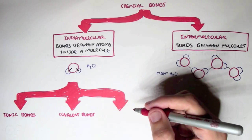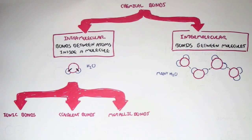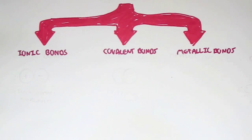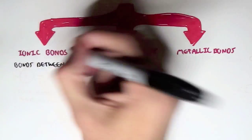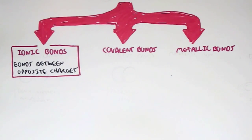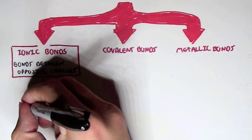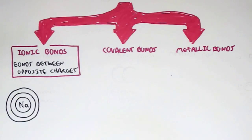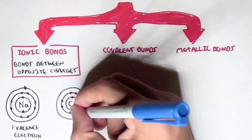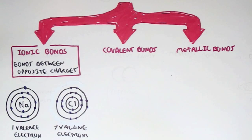There are three main types of intramolecular bonds: ionic bonds, covalent bonds, and metallic bonds. Ionic bonds are essentially bonds between opposite charges. For example, sodium (Na) has one valence electron, while chloride has seven valence electrons. Chloride needs one more electron to become stable following the octet rule, and sodium just has to lose one electron to become more stable.